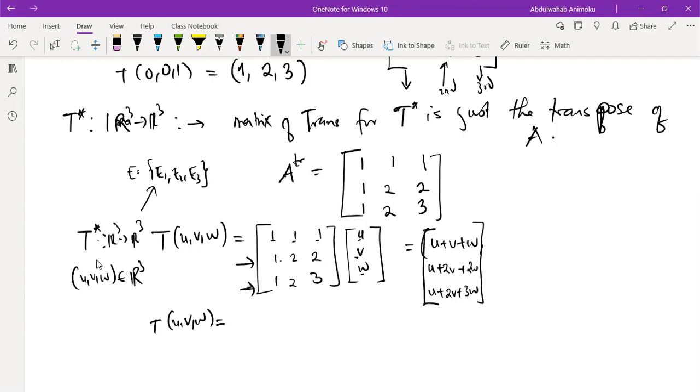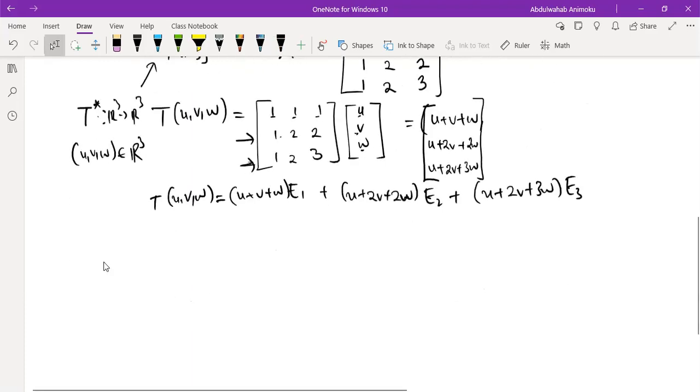As u plus v plus w times e₁ plus u plus 2v plus 2w times e₂ plus finally, u plus 2v plus 3w times e₃. And as you can imagine, this will just be the same vector in a row form.